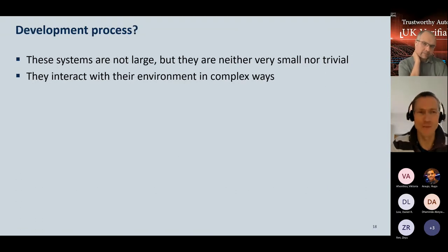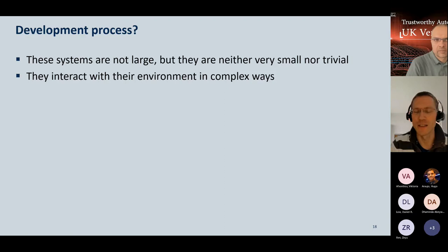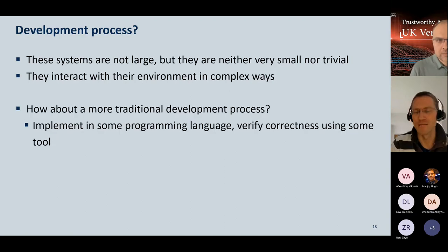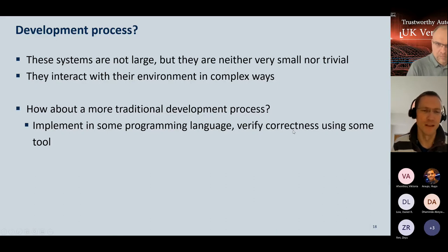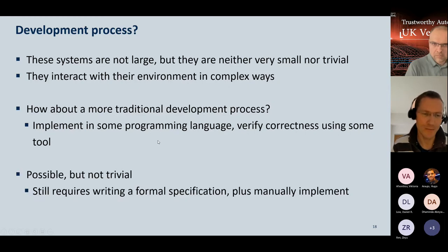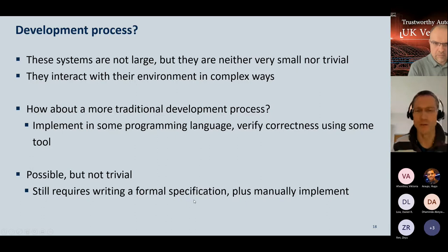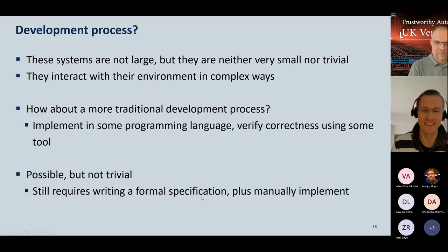These systems are not very large but not trivial either — their main complexity lies in interacting with the environment in complex ways. In a traditional development approach, you would implement the systems in a programming language and then still verify correctness using formal specification tools. You would still need to write a specification to ensure your elevator doesn't get stuck or your planes don't crash due to a missed case.